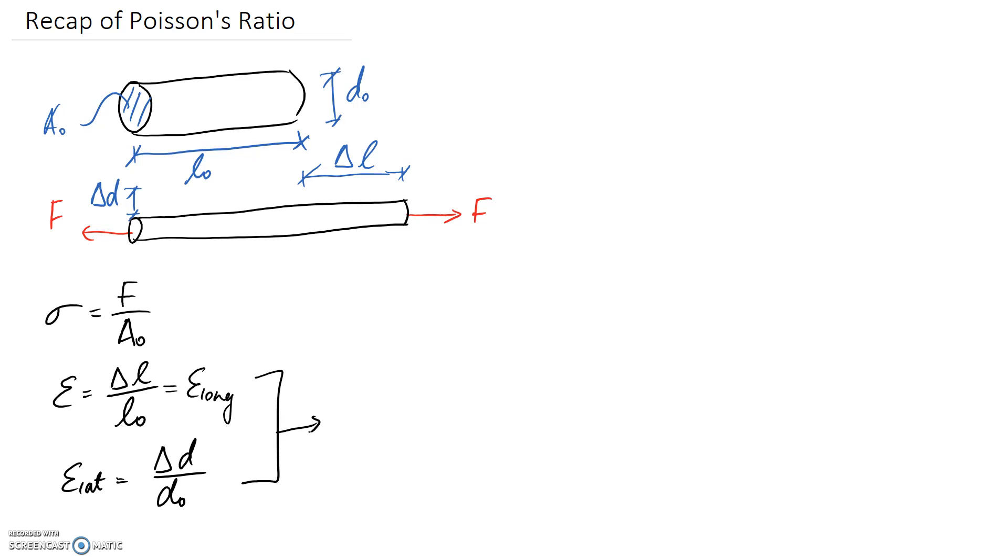Now, when we relate these two properties together, the strain properties, we end up with Poisson's ratio. It's the ratio of the lateral strain divided by the longitudinal strain, and there is a negative in here to correct for the direction.